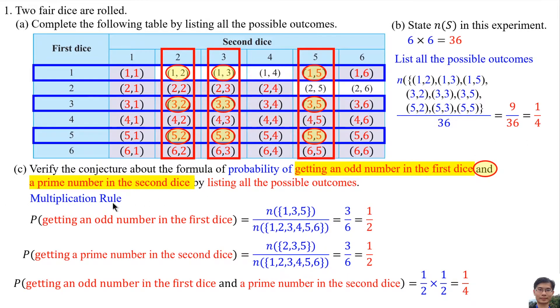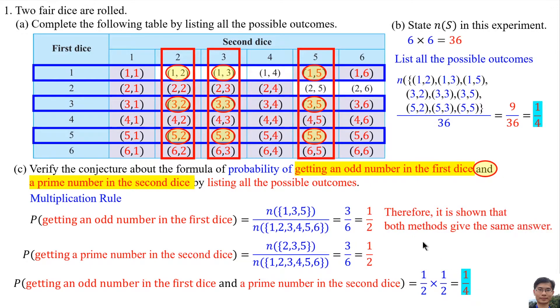The Multiplication Rule also gives 1 per 4. Therefore, it is shown that both methods give the same answer.